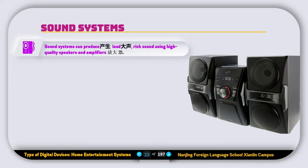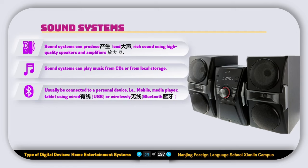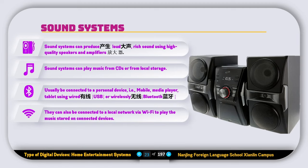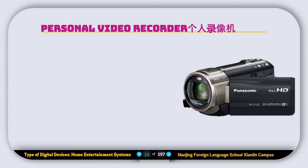The next home entertainment device is the sound system. Sound systems can produce loud, rich sound using high-quality speakers and amplifiers. They can play music from CDs or from local storage, and can usually be connected to a personal device such as a mobile phone, media player, or tablet using a wired connection like USB, or wirelessly via Bluetooth. They can also connect to a local network via Wi-Fi to play music stored on connected devices.